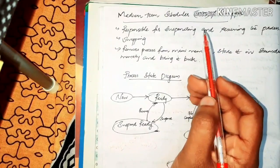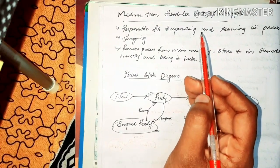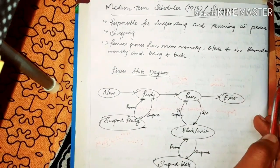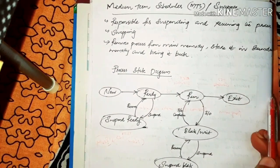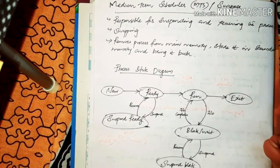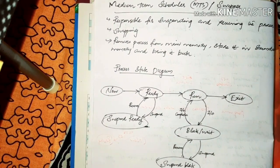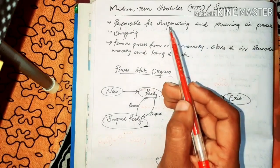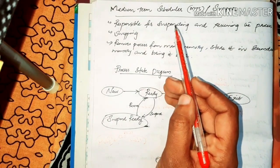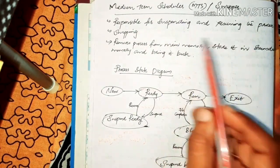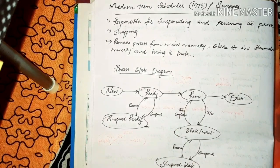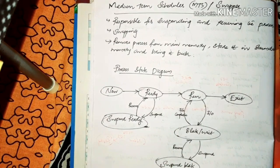The medium-term scheduler, also called the swapper, is responsible for suspending and resuming processes. It manages the movement of processes between main memory and secondary memory.